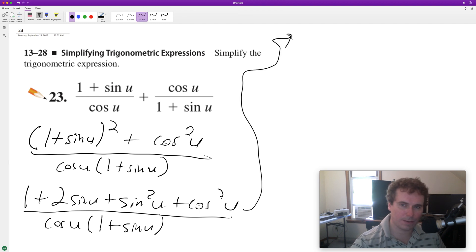Moving up here, this is a pretty cool trig property. It's just equal to 1, so we're left with 1 plus 2 sine u plus 1, which gives us 2 plus 2 sine u